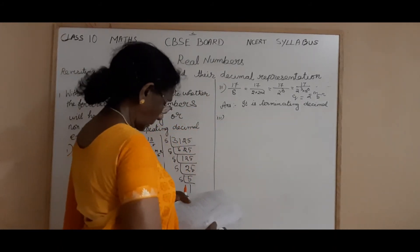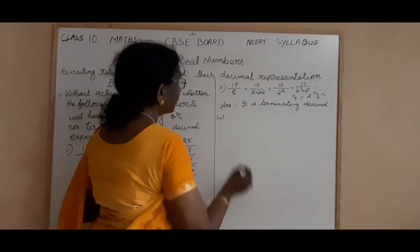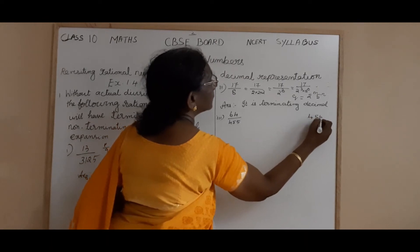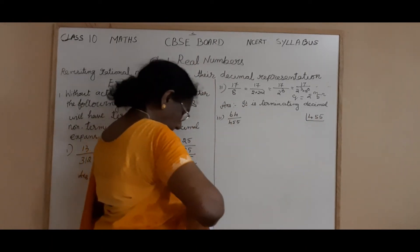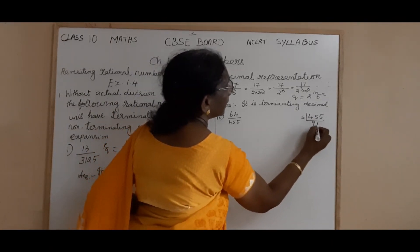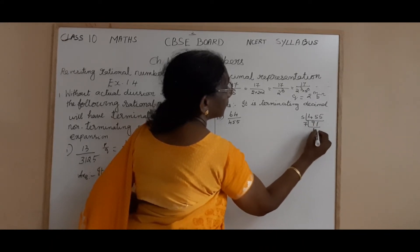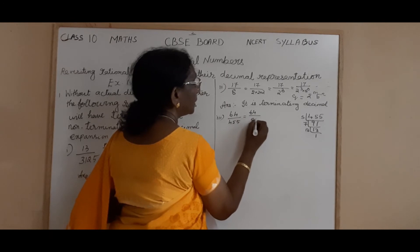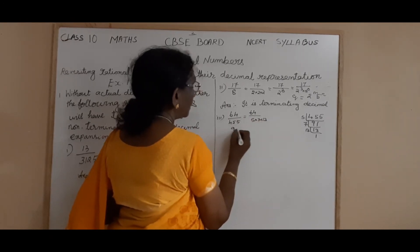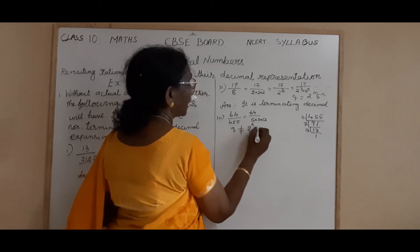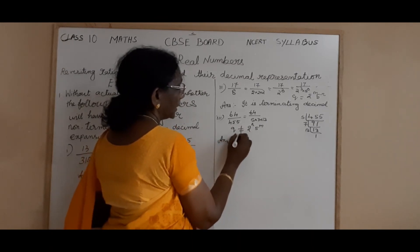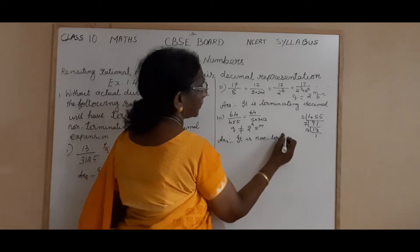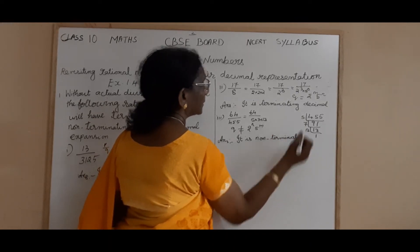Sum number 3: 64 by 455. Find the prime factors of 455. It is not divisible by 2 or 3. It is divisible by 5: 5 into 91. And 91 is 7 into 13. So 455 is 5 into 7 into 13. Therefore Q is not in the form of 2 power M into 5 power N, because 7 and 13 are also prime factors. So the answer is: non-terminating repeating.